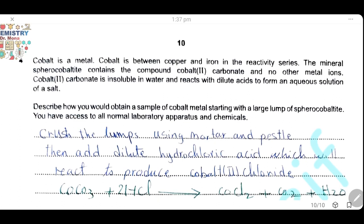Question 4. Cobalt is a metal and cobalt is between copper and iron in the reactivity series. So cobalt is less reactive than iron and more reactive than copper. The mineral ore of cobalt contains the compound cobalt(II) carbonate and no other metal ions. Cobalt carbonate is insoluble in water and it reacts with acid to form an aqueous solution of a cobalt salt. So the cobalt carbonate is insoluble in water but can give me a soluble cobalt salt when it reacts with acid.